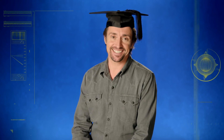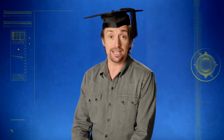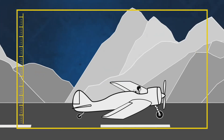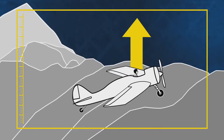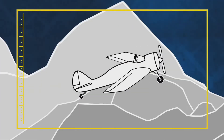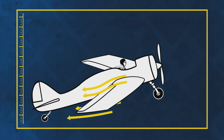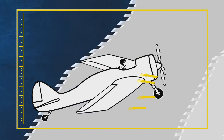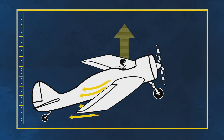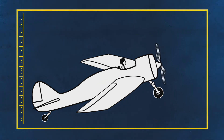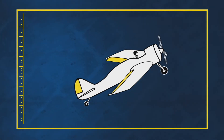Turning to page 12: Bernoulli's principle states that the faster a fluid like air is flowing, the lower its pressure will be. To take off, a plane has to create enough lift to overcome the force of its weight. Its wings are designed to make air travel faster across the top surface, creating an area of lower pressure above the wing, which contributes to lift.